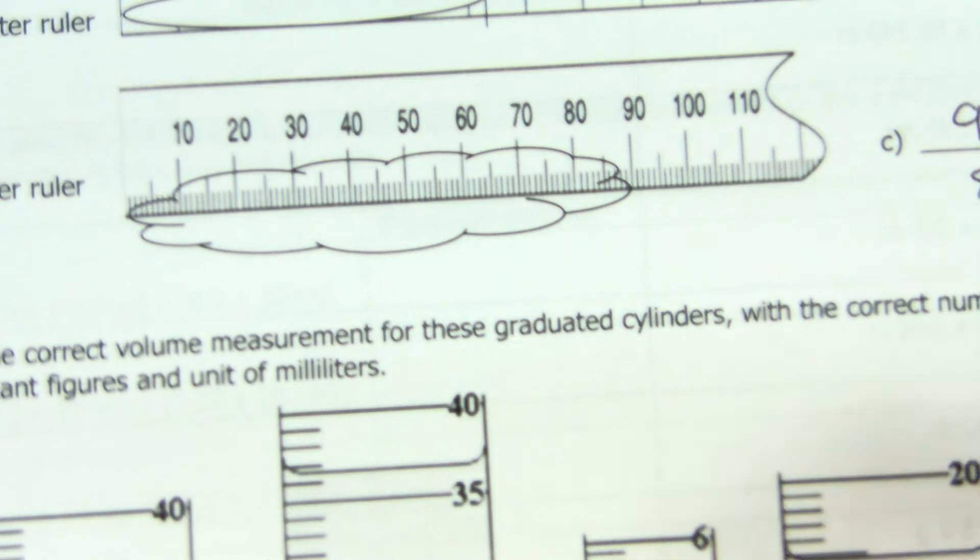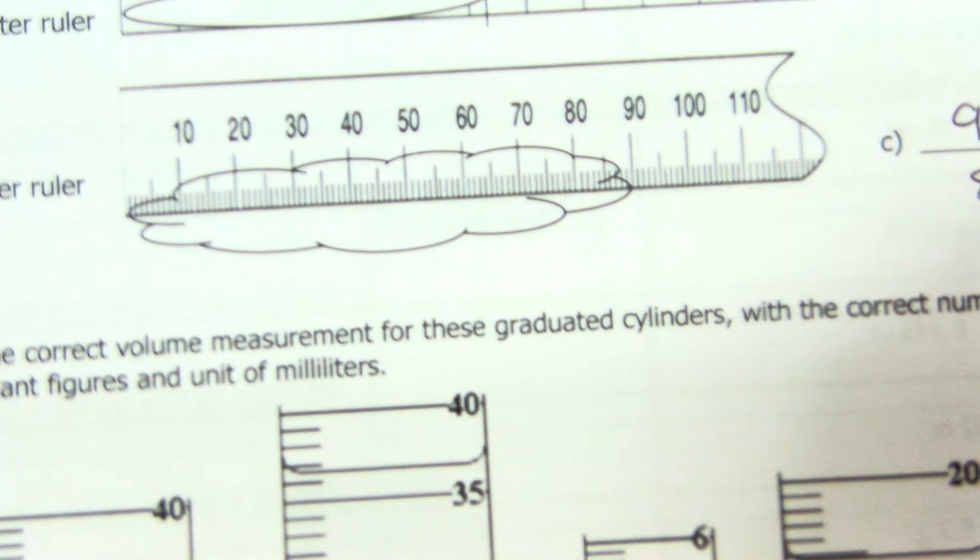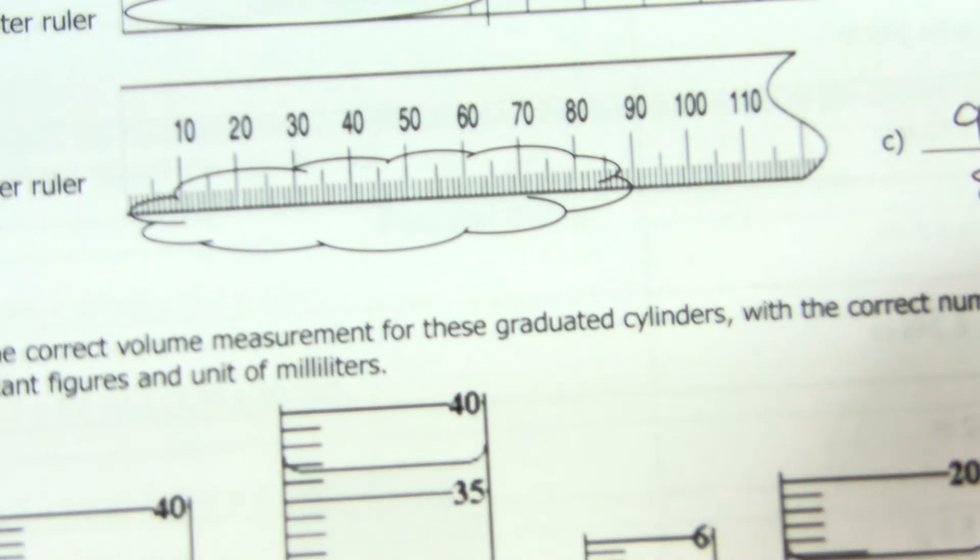So, when we are looking, if somebody had read this as 90.00, would that be okay, too? Sure, it would, because we are estimating. It's really hard to tell what's in between there.